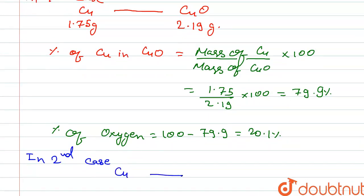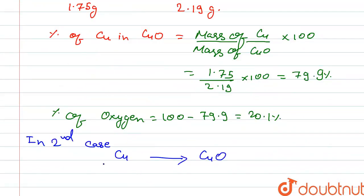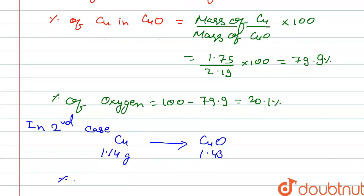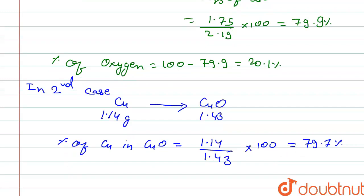In the second case, converting copper to copper oxide: the mass of copper given is 1.14 grams, and it forms 1.43 grams of copper oxide. The percentage of copper in copper oxide is 1.14 divided by 1.43 into 100, which gives us approximately 79.7 percent.